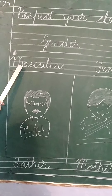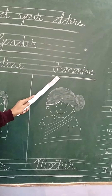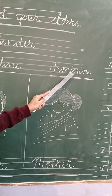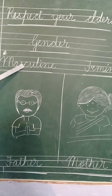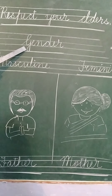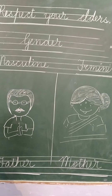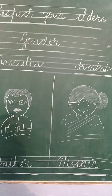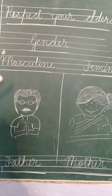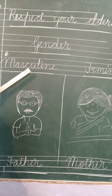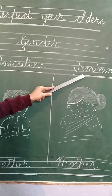Then write masculine and feminine. What is the spelling of masculine? M-A-S-C-U-L-I-N-E. And the spelling of feminine? F-E-M-I-N-I-N-E. Students, before writing this, you have to know what is the meaning of gender. Gender is used to describe the character of female or male. When we talk about the male — men — then we call it masculine. When we talk about the woman or girl, this is called feminine.